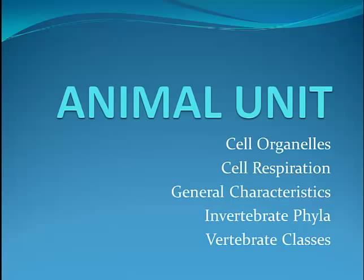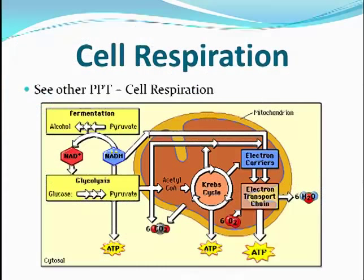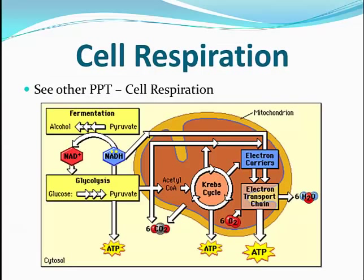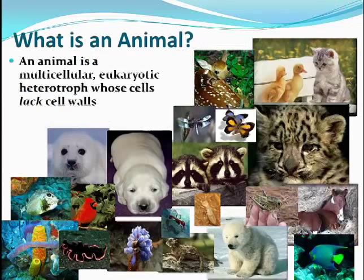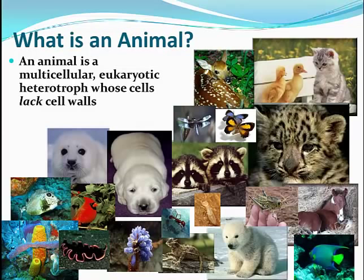We're going to take a look at what else we need to do in the animal unit. We've already covered animal cell organelles and their function, so this is just a quick review if you want to look things over as far as where they're located and what each organelle does. We also just finished our cell respiration, so refer back to the other PowerPoint titled Cell Respiration that you can find on Blackboard. Now we're going to continue to the general characteristics of an animal.